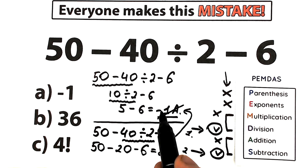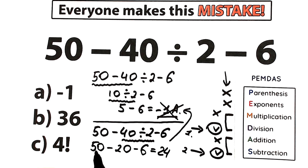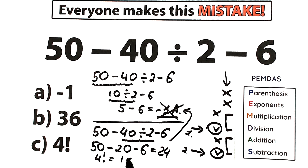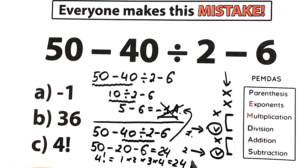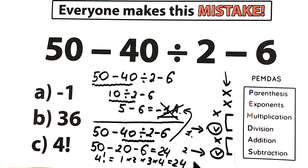Forget about option minus 1 — it is absolutely wrong. The correct answer is 24. Looking at the answer choices, option C shows 4 factorial, which equals 1 times 2 times 3 times 4 = 6 times 4 = 24. So option C gives us 24, which matches our correct answer of 24.